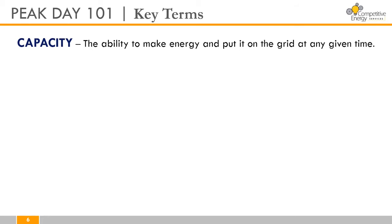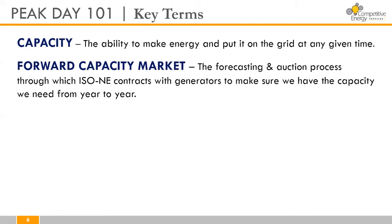The next term we want to define is the forward capacity market — the forecasting and auction process that ISO New England uses to contract with generators and make sure the grid has the capacity it needs from year to year. In other words, this is how ISO New England charges electricity users for capacity. Each end user pays into this forward capacity market because it funds investments which are necessary for grid reliability.